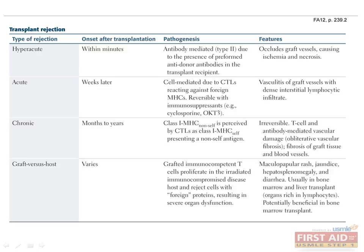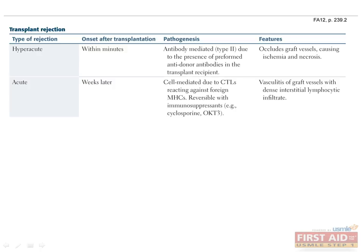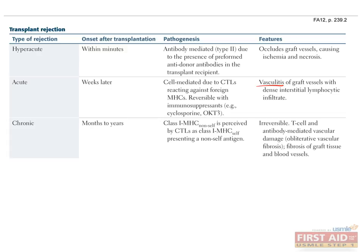Pay special attention to the timeframe and features of each rejection type. Hyperacute rejection is the earliest manifestation, resulting from preformed anti-donor antibodies in the recipient; occlusion of graft vessels leads to ischemia and necrosis. Acute rejection typically occurs weeks after transplantation and is a cell-mediated reaction due to cytotoxic T cells reacting against foreign MHCs; it may be reversed with cyclosporine and OKT3, and histologically shows vasculitis with dense interstitial lymphocytic infiltrate. Chronic rejection occurs months to years after transplantation and is characterized by obliterative vascular fibrosis due to T cell and antibody-mediated damage; unfortunately, it is not reversible.